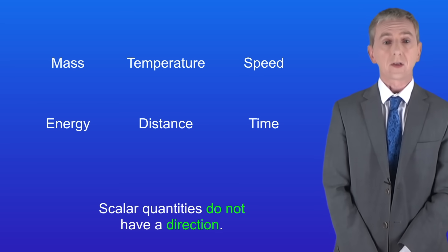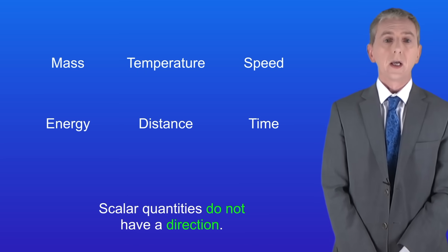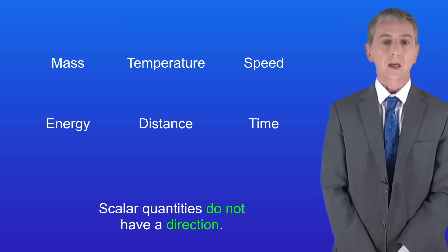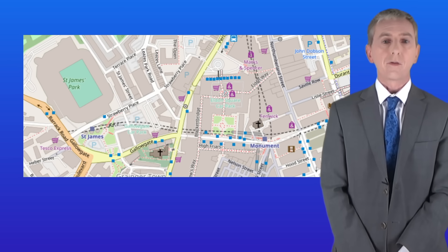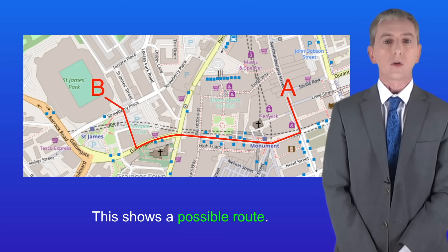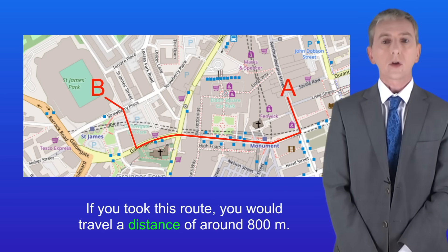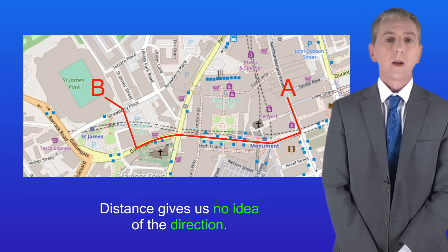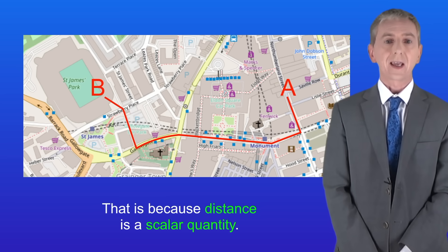Scalar quantities do not have a direction, so we're going to look at distance as an example of a scalar quantity. I'm showing you here a map. Imagine that you wanted to go from point A to point B. This shows a possible route. Now if you took this route, you would travel a distance of around 800 meters. But the key point is that distance gives us no idea of the direction, and that's because distance is a scalar quantity.